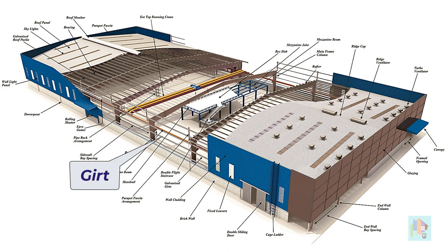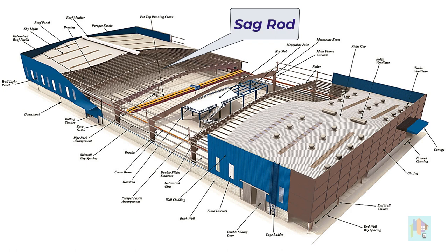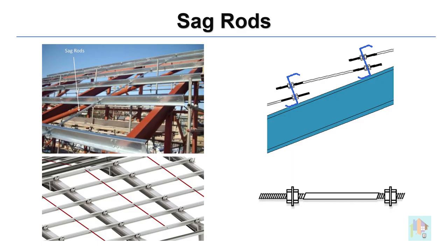Purlins are also used in the side walls to support the wall cladding and are also known as girts, and we need to model these. To keep the purlin or girt in place and to resist any web or flange buckling, all these members are connected using a sag rod — typically a solid 10 or 12 mm rod with threaded ends used in a zigzag pattern. These sag rods are very important for the stability and design of the entire structure. Several sag rods are used in each panel, so the total number is quite large, and for simplicity we don't model these elements. Instead, we consider their effect on the purlin using correct design parameters.